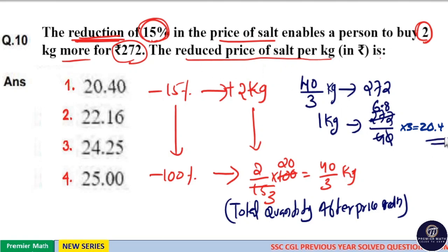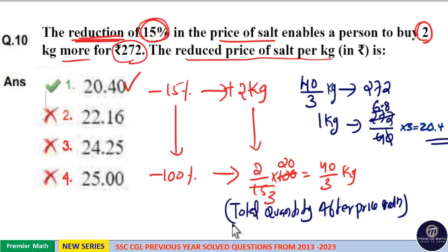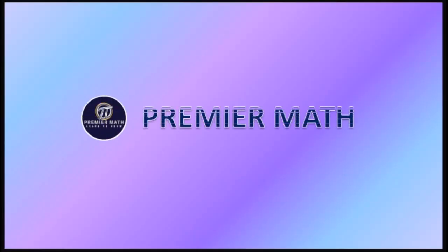So reduced price is equal to Rs.20.4 per kilogram. Option 1 is your answer. After price reduction, 1 kilogram costs Rs.20.4.